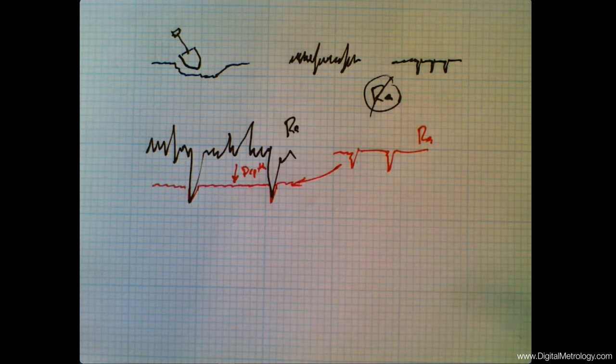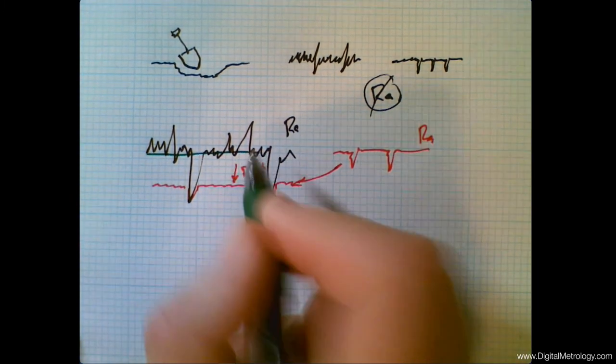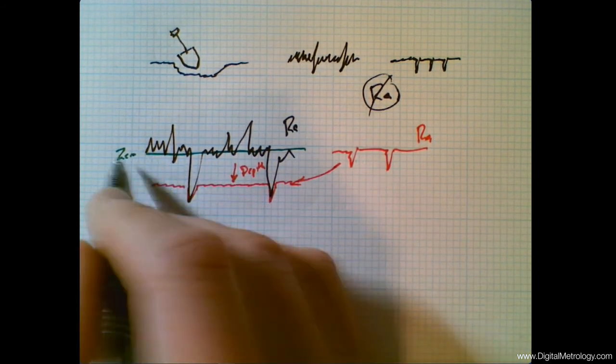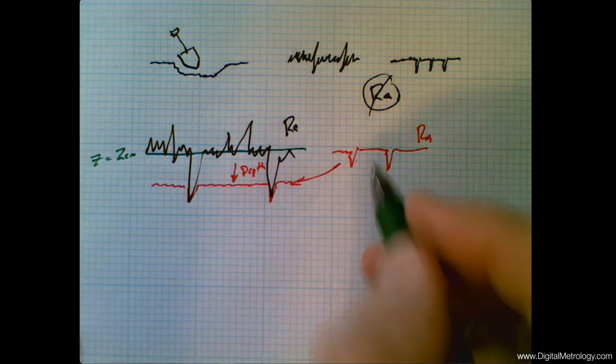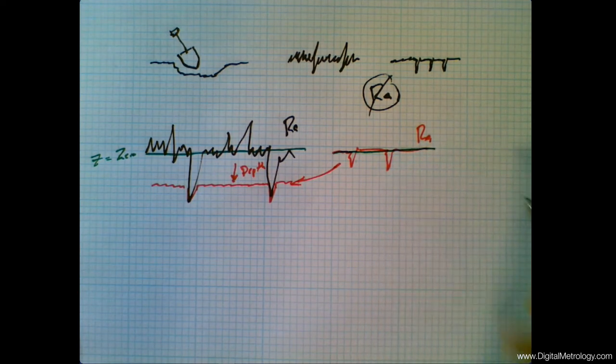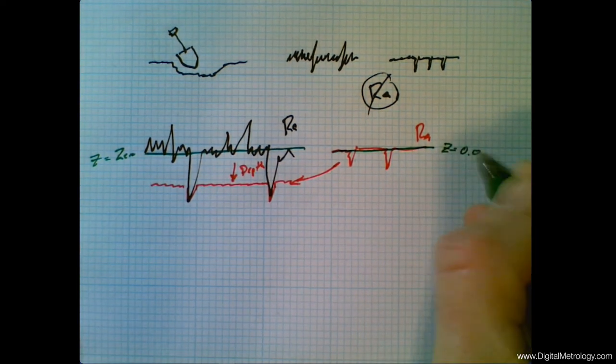One of the problems is that the RA value uses a mean line, or the zero line, and in the original surface the zero right here, or the z-axis zero to be more specific, is here, and on the worn surface we put the mean line right here because that's the way the measurement system works. We kind of take the average for zero.